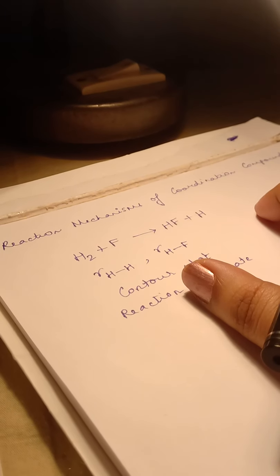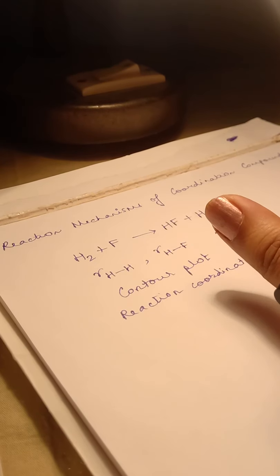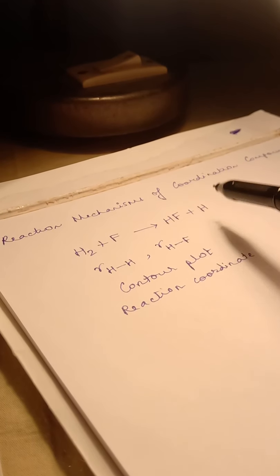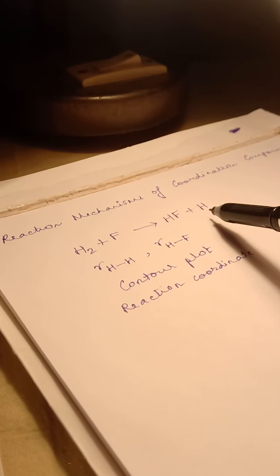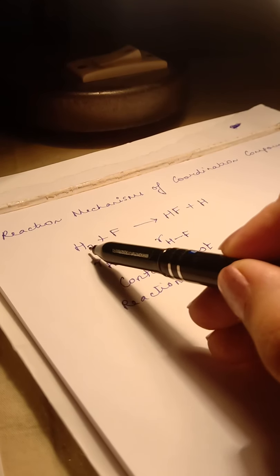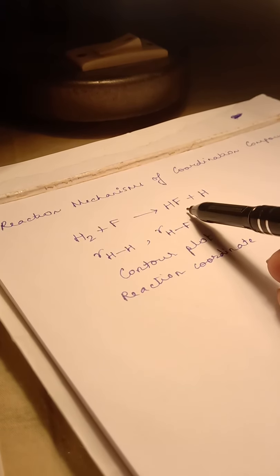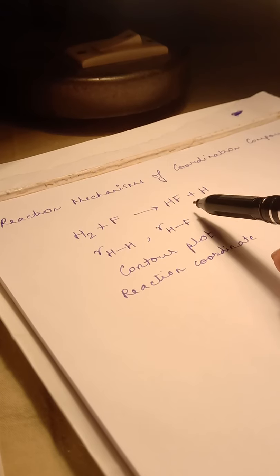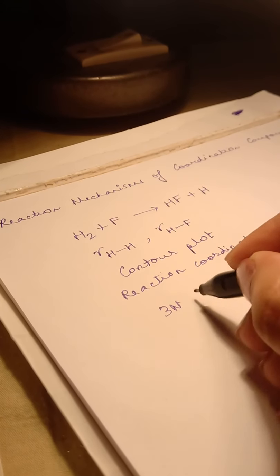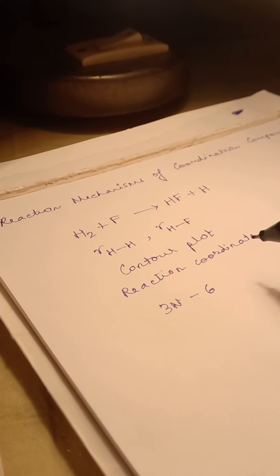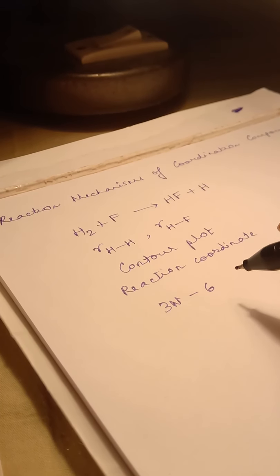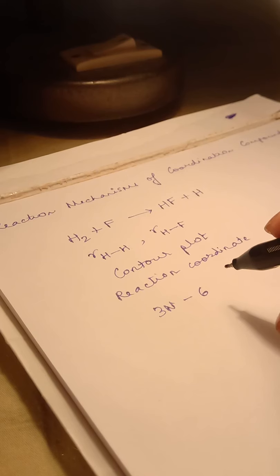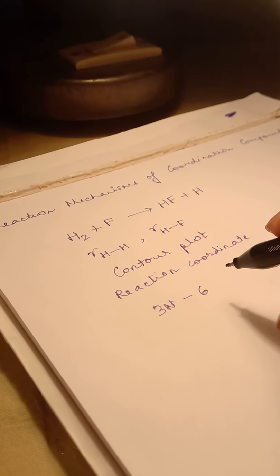The next question is why do we need the reaction coordinate and why not monitor it as a 3D plot? Because this is a very simple reaction. All reactions are not this simple. In reality, if you have a molecule which is non-linear, all these molecules H2 is a linear molecule and HF is also linear, so the bond angles were not considered. But the moment you come to a non-linear molecule having N atoms, you will have 3N-6 coordinates to consider. If you have 3N-6 coordinates, the number of dimensions in which you will have to plot will become extremely large. That is not a very feasible or easy to do process. That is the reason why we use the concept of reaction coordinate.